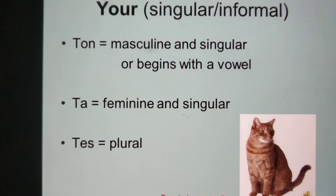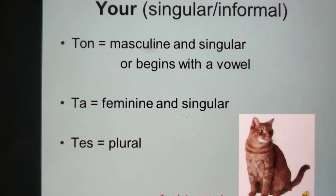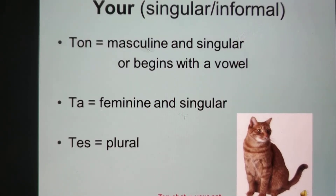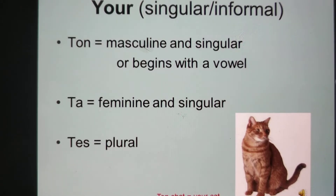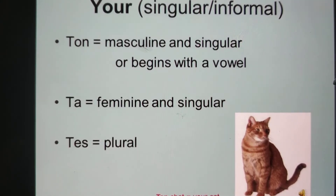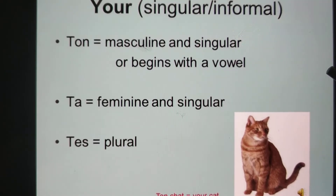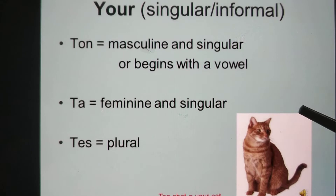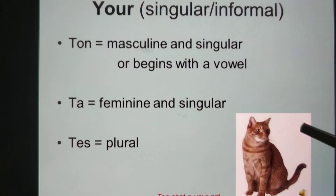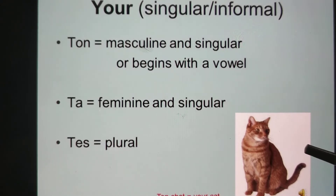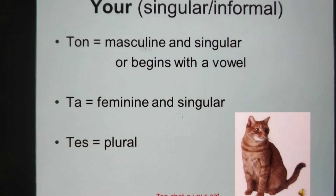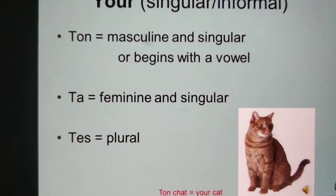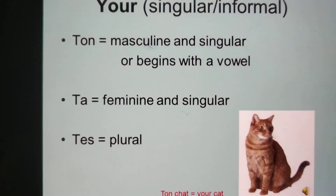For 'your' — singular and informal (tu form) — we have three forms: ton, ta, tes. Ton is used with masculine singular nouns or singular nouns starting with a vowel: ton père, ton avion, ton image. Ta is used with feminine singular nouns: ta mère. Tes is used for the plural form: tes parents, tes stylos. For example, 'ton chat' means your cat. Remember, ton, ta, tes is used in the informal way.